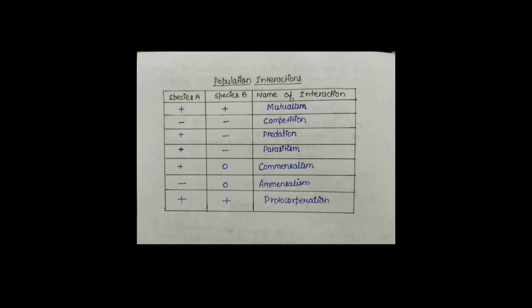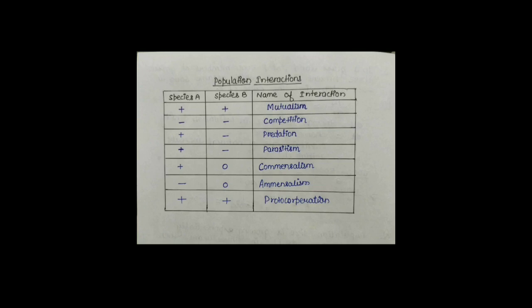आज की क्लास में हम लोग Population Interaction के Examples को डिस्कस करेंगे। Last Class में हमने Population Interaction क्या होता है, कौन-कौन से Types होते हैं Population Interaction के, वो सब कुछ डिस्कस कर लिया था। Examples उनके डिस्कस करने से पहले हमने जो भी कुछ Last Class में पढ़ा था, उसे हम एक Table के Form में पहले समझ लेते हैं।